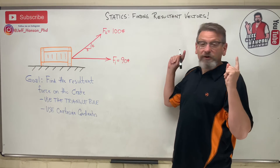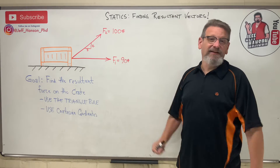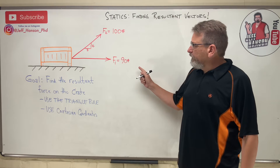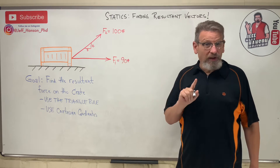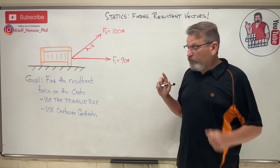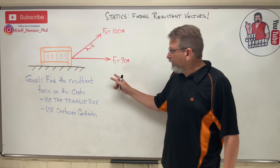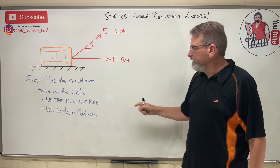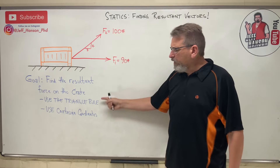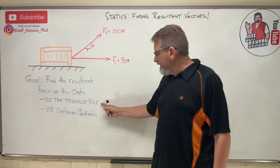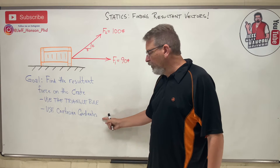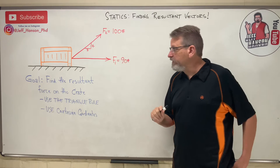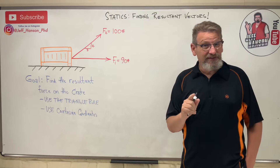We're back talking statics again — resultant vectors one more time. We're going to do a problem two different ways: finding the resultant of vectors F1 and F2 pulling on this crate. Method one is the triangle rule, and method two is Cartesian coordinates. We've already talked about those, so it should be straightforward.